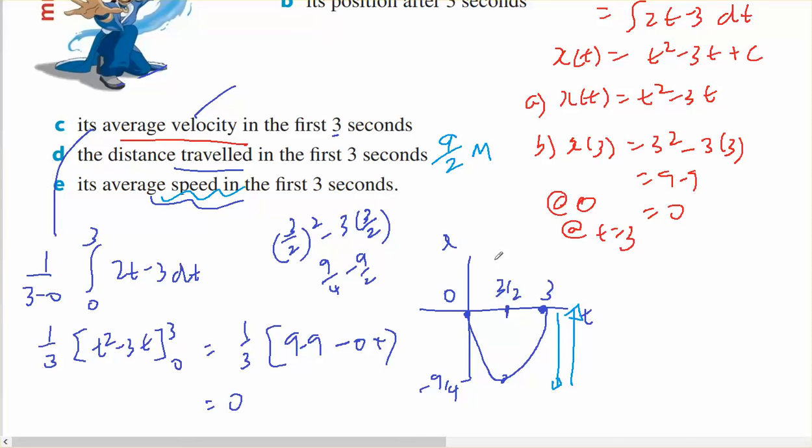And the average speed will be total distance traveled, 9 over 2, all divided by 3. So 9 over 2 over 3 over 1 is 9 over 2 times 1 third, which is 3 over 2 meters per second, should be the average speed.